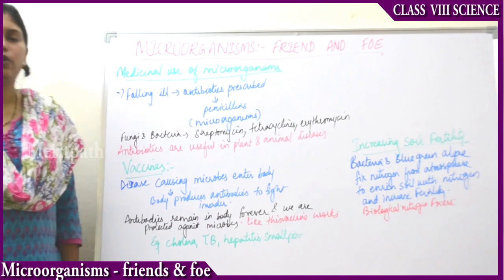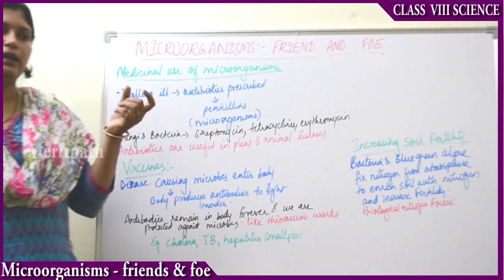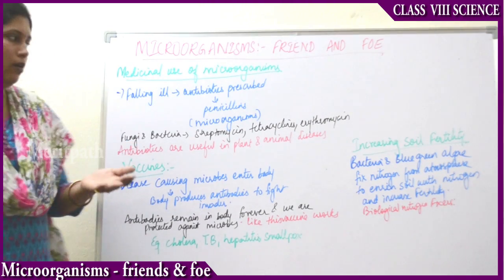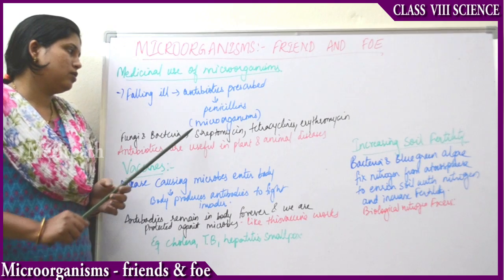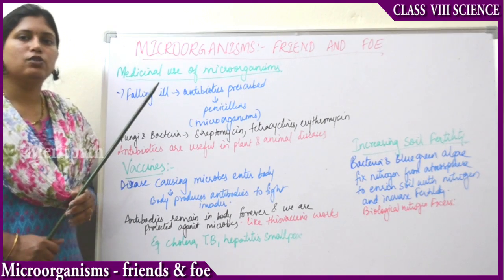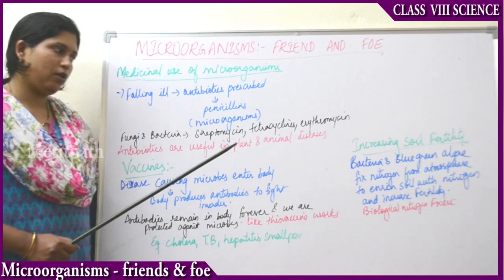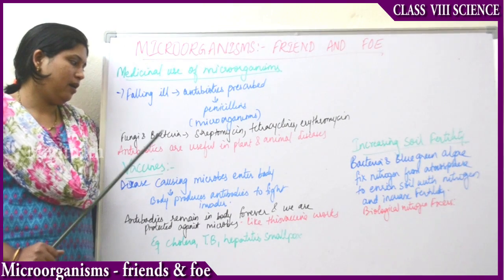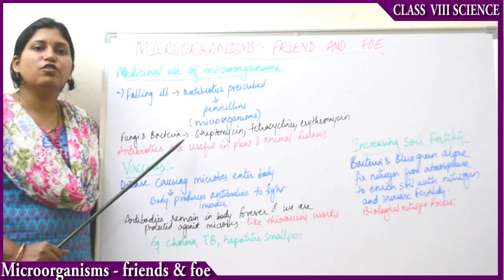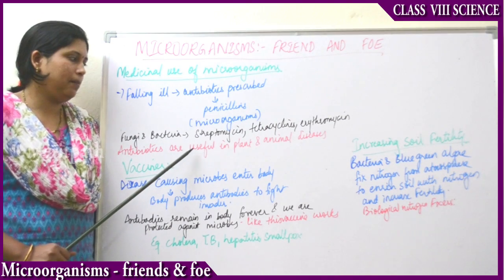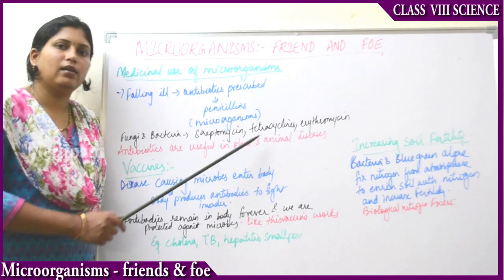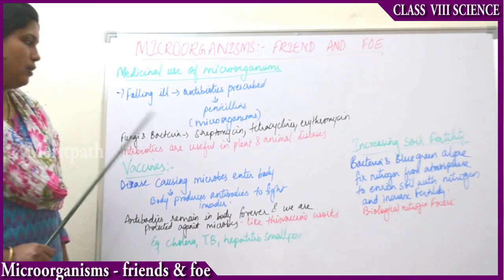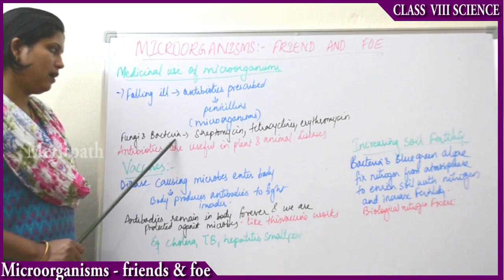All antibiotics — antibiotic is nothing but antibacterial, against that bacteria or against that microbe. Penicillin is a commonly and widely used prescribed antibiotic, and it is made up of microorganisms. Fungi and bacteria are also sources of many antibiotics. For example, streptomycin, tetracycline, and erythromycin. These antibiotics are sourced from fungi and bacteria.